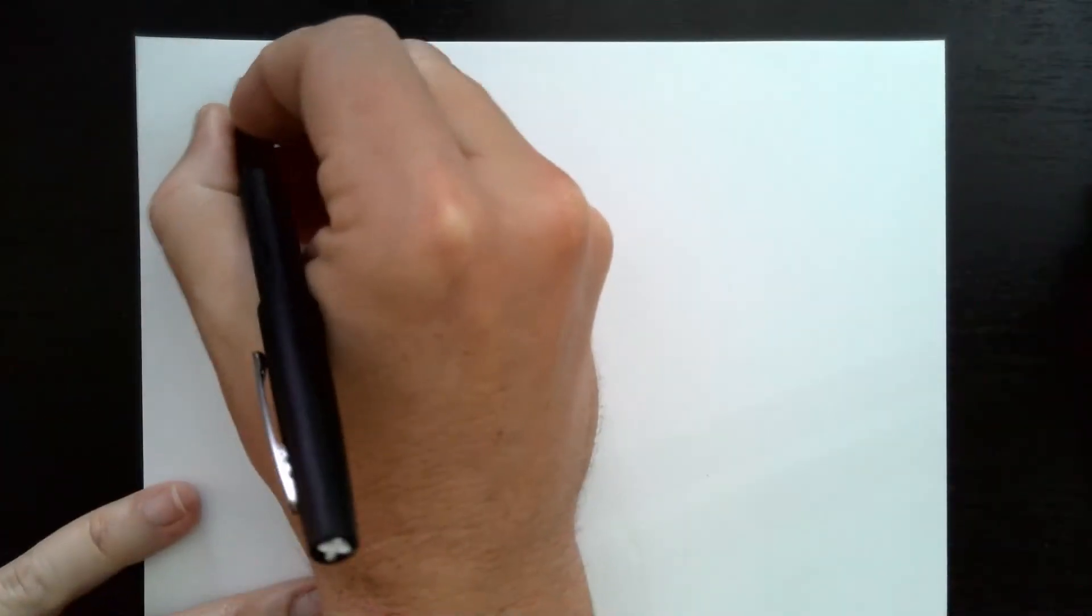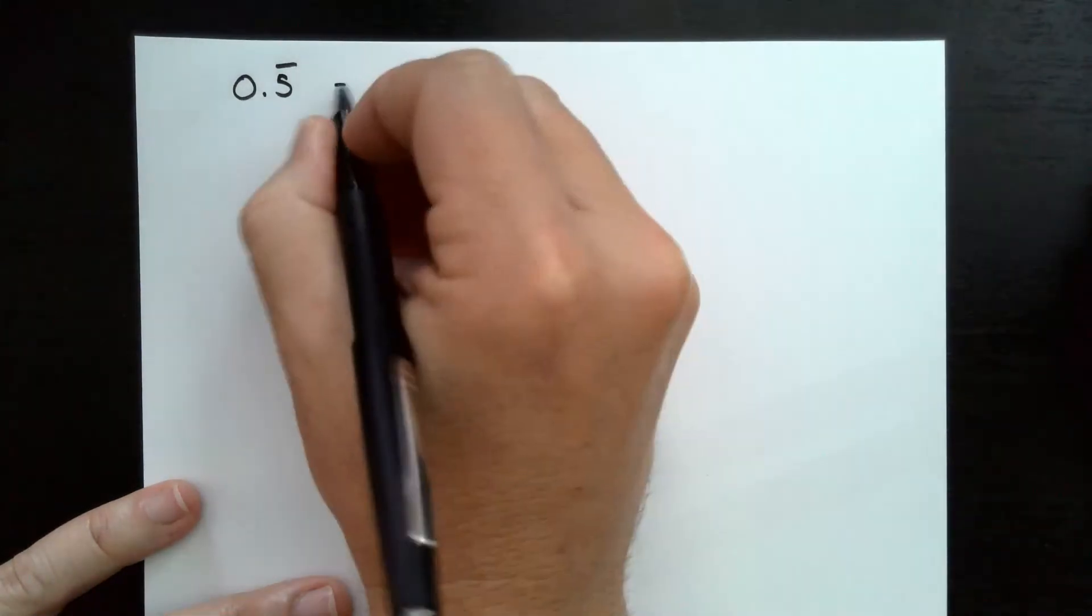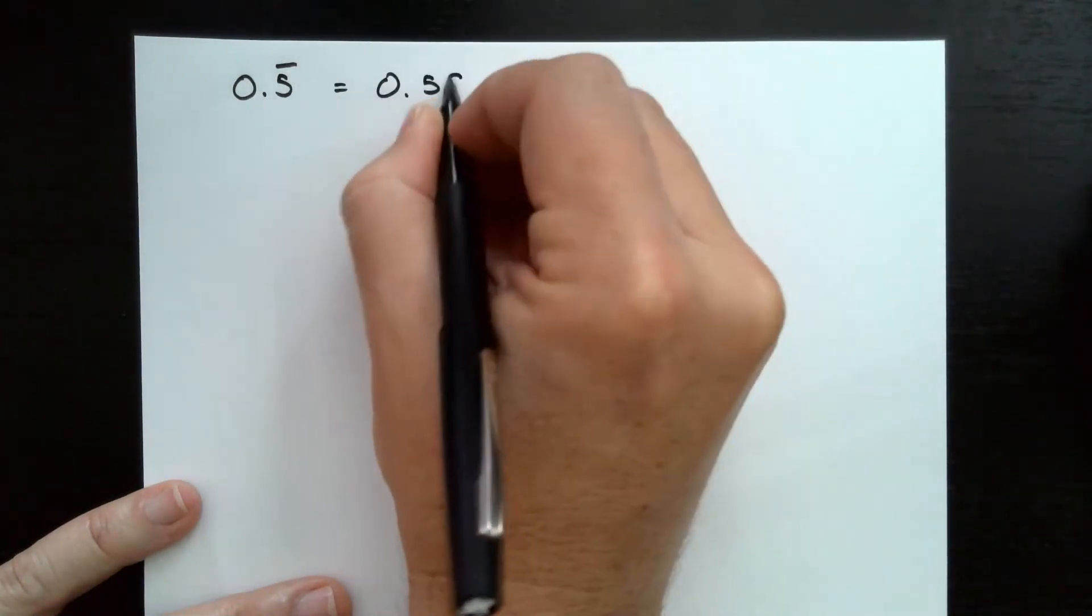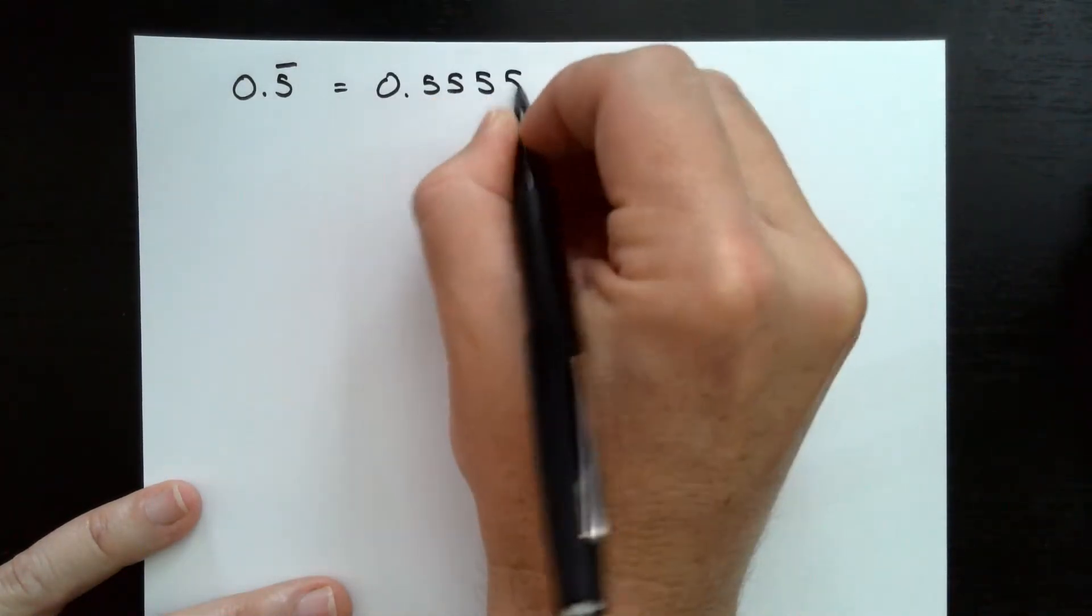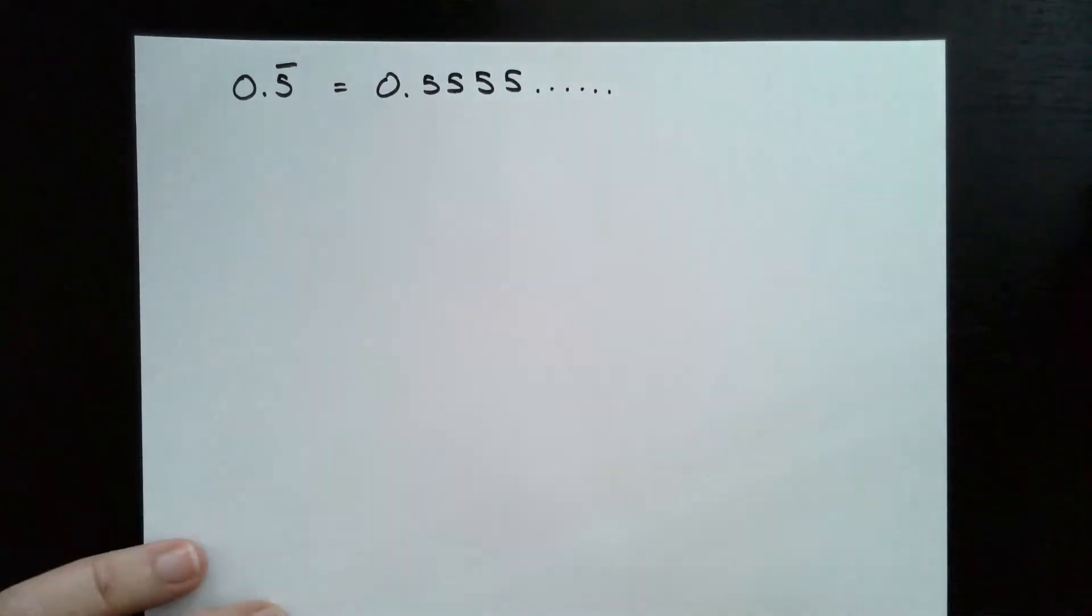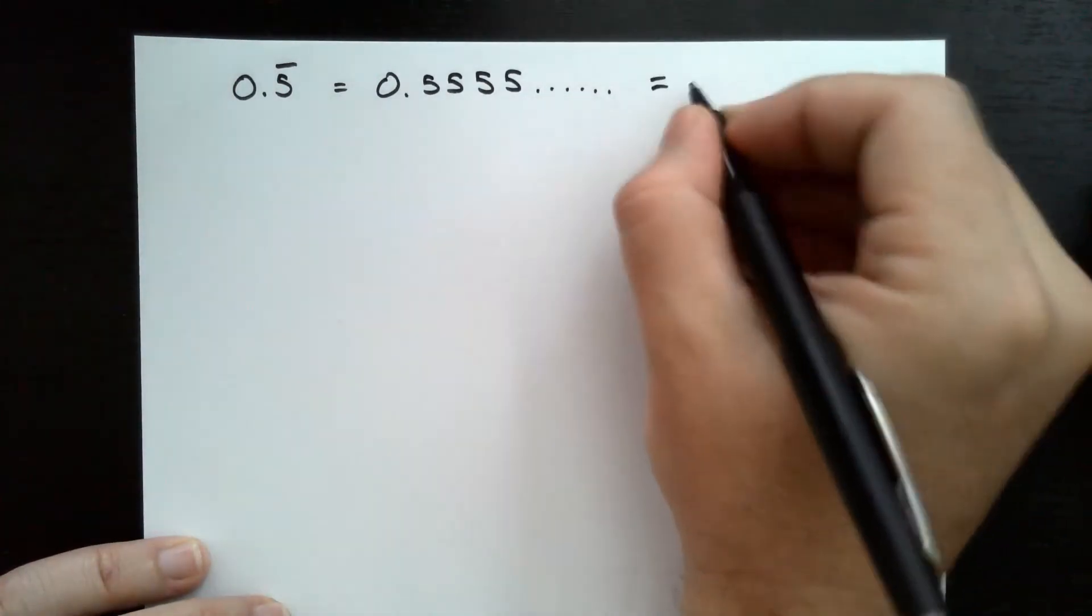So for the first example, we've got 0.5 repeating. What that means is we have 0.5555... it goes on forever. We're going to set that equal to x.